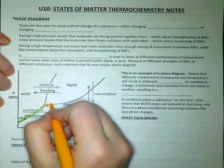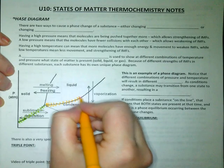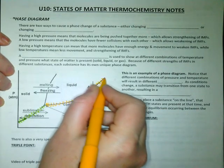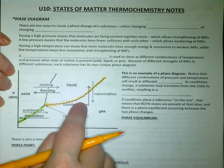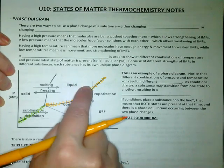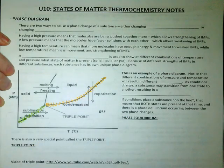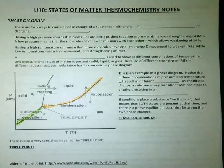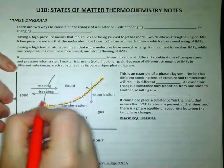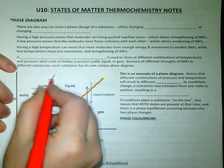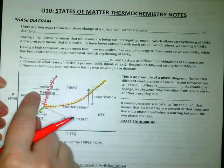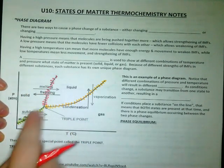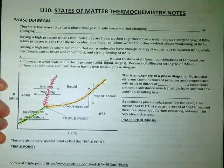The same thing is true of here in this spot. Any place along this entire line, this substance would constantly be changing back and forth from a liquid to a gas through either vaporization or condensation. And finally, anywhere along this line, my substance is constantly moving back and forth between a solid and a liquid, melting and freezing. All of these lines are called phase equilibrium.